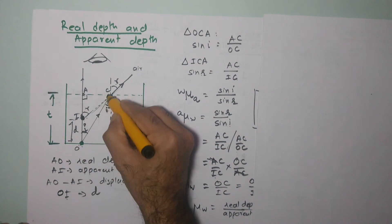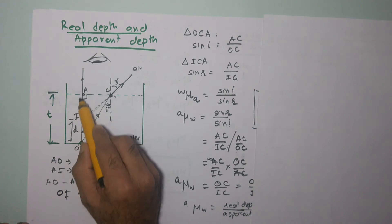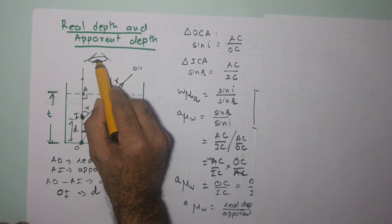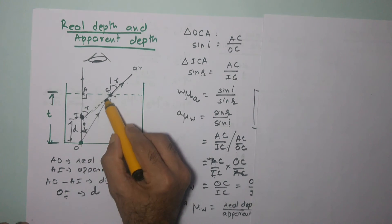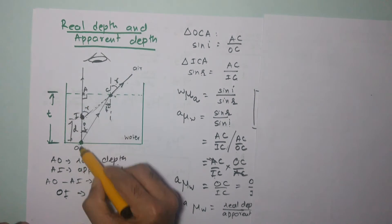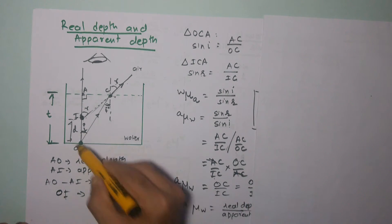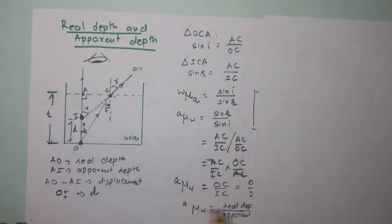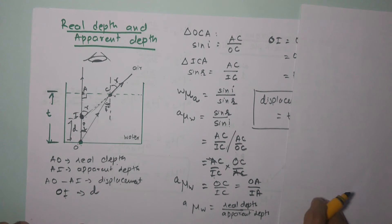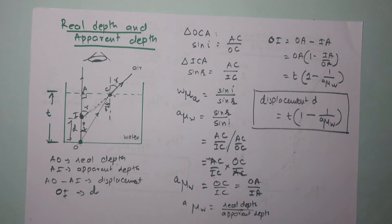Now, OC is this distance and IC is this distance. Since the aperture of the eye is very very small, it can only see both rays if they are very close to each other. So this angled ray will be very very close to the perpendicular line. Because AC will nearly tend to zero, OC can be approximated as OA, and similarly IC can be approximated as IA. So we get OA upon IA, meaning the refractive index of water with reference to air equals OA upon IA.